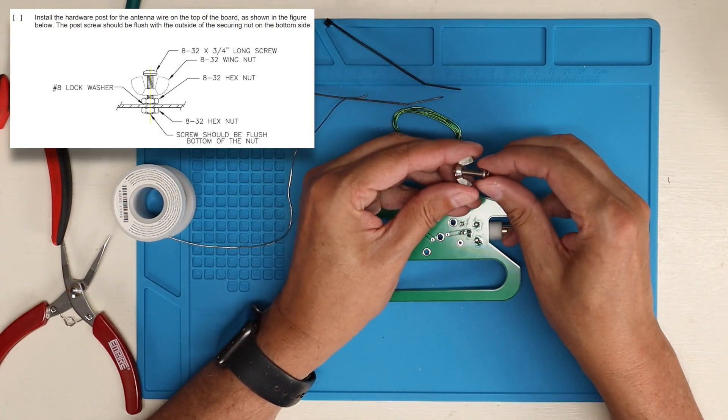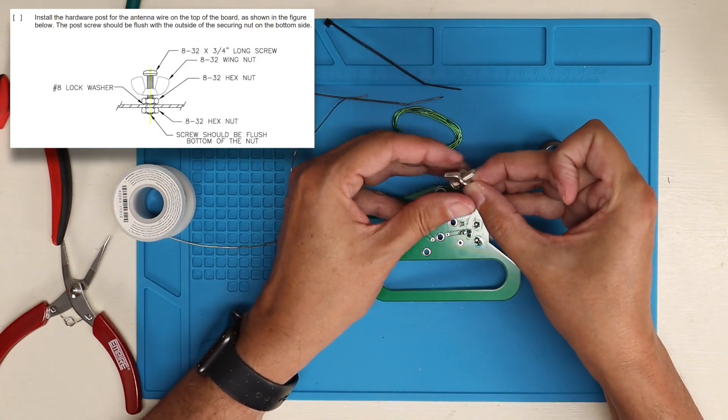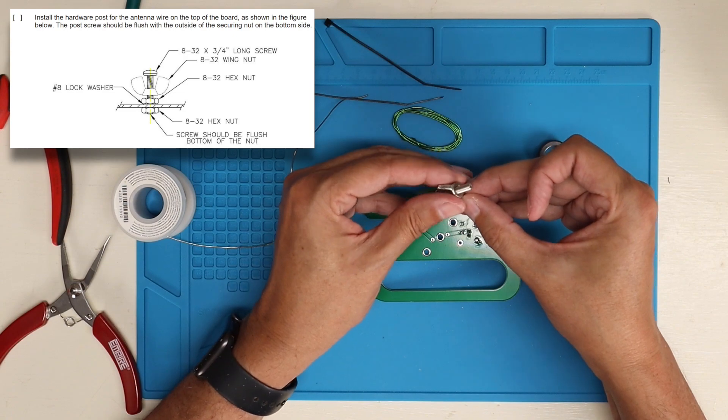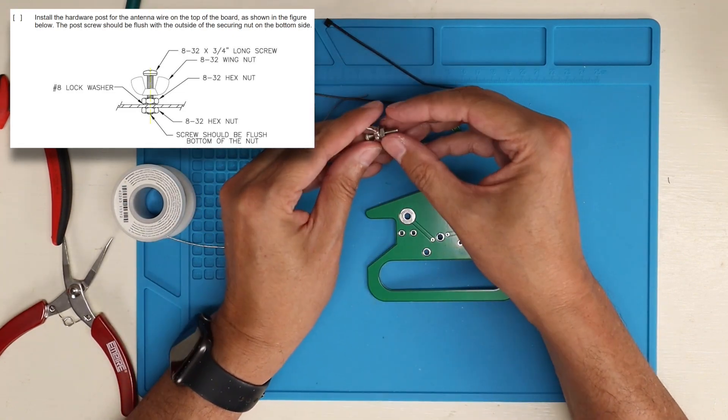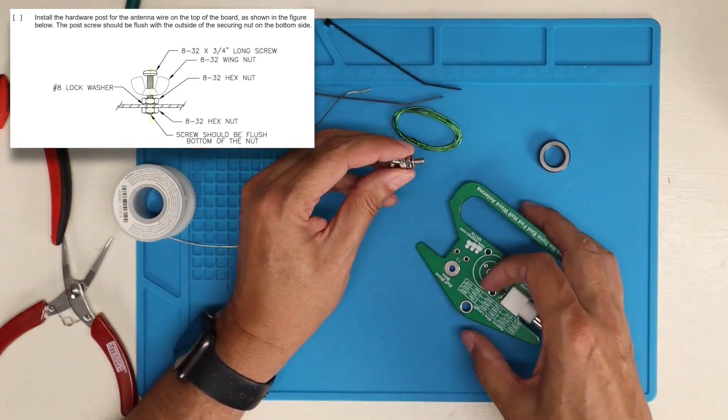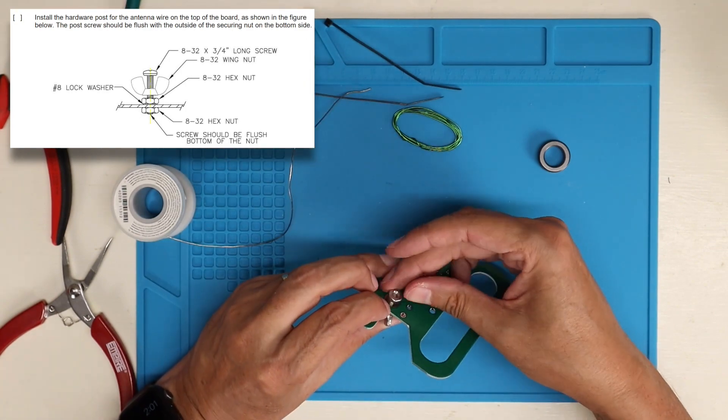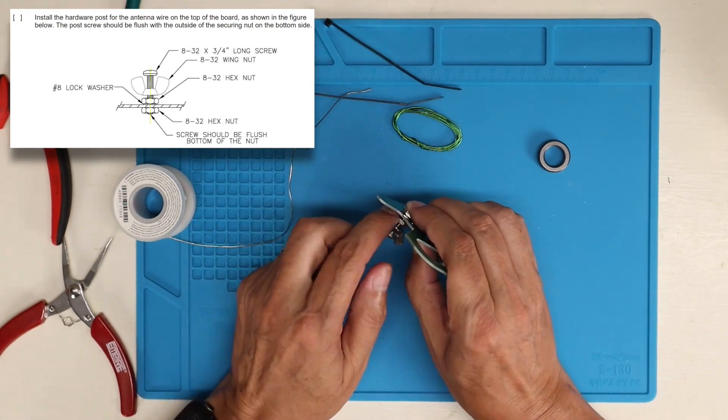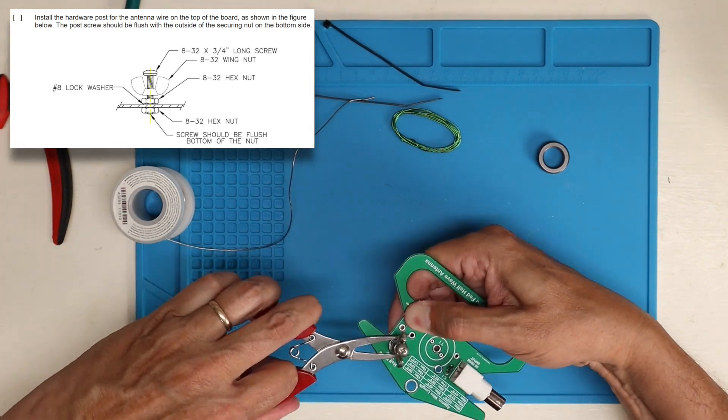So next is the antenna mounting hardware. You can see you've got the wing nut and the screw. You can just follow the diagram is the best way to do this. And you just want to make sure that the screw is flush with the bottom.